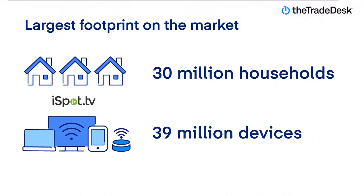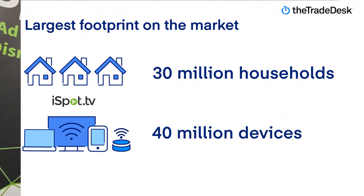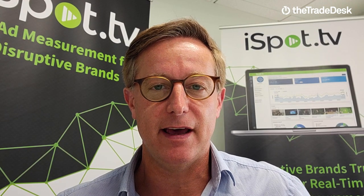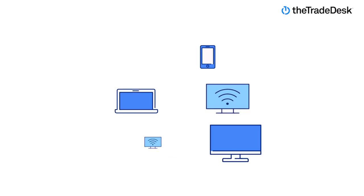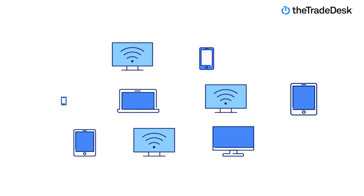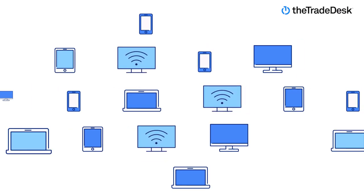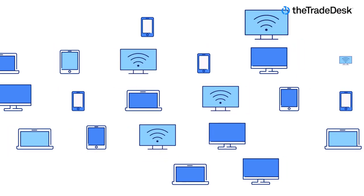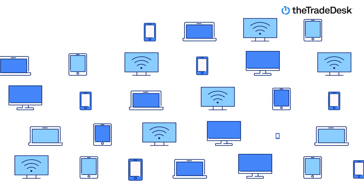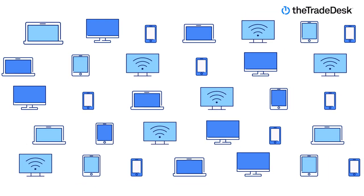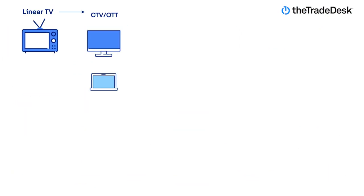With this, advertisers are able to measure reach and frequency across Linear and connected TV in a de-duped manner. With iSpot TV, you can easily measure how effectively your connected TV ads are reaching consumers who no longer watch TV, or never did, via traditional Linear methods.